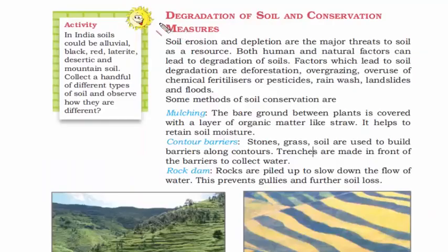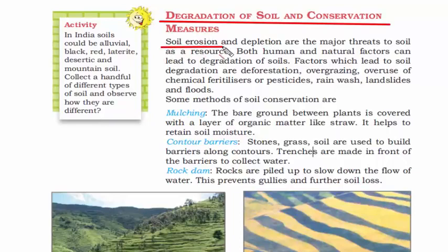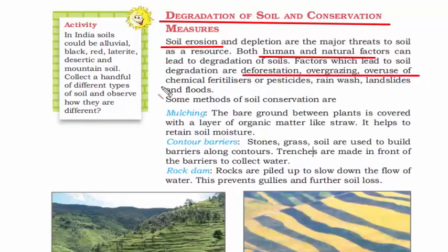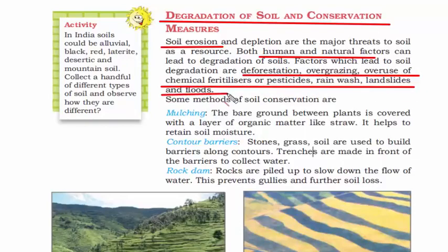Soil degradation is also known as soil erosion — both terms refer to the same thing. It happens because of both human activity and natural causes. The important factors that lead to soil degradation are deforestation, overgrazing, overuse of chemical fertilizers or pesticides, rain wash, landslides, and floods.